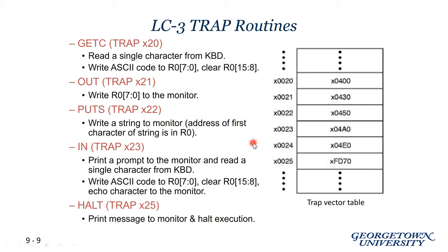Here are some of the common traps specified in Patt and Patel. By standard, at table index number 20 — trap 20 — we have the get character service routine, simply called GETC. This is the service routine that reads in a single character from the keyboard data register. Similarly, we have a service routine for OUT which writes out to the monitor, PUTS which writes a string to the monitor, IN which prompts and writes, and HALT which you have seen.